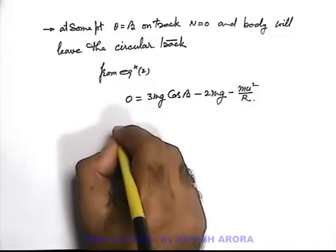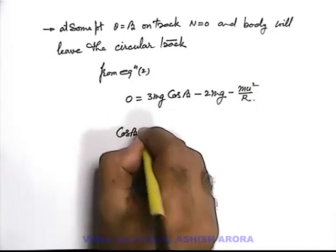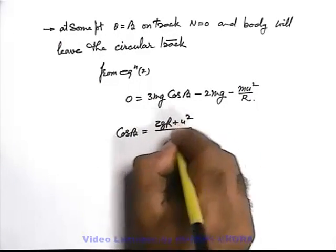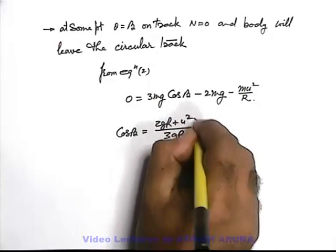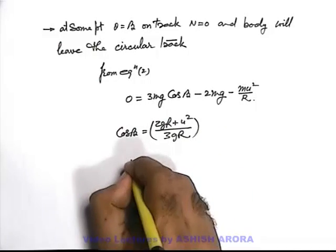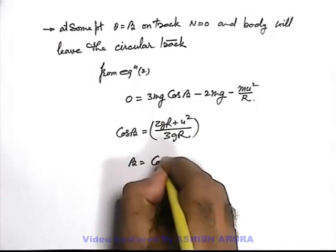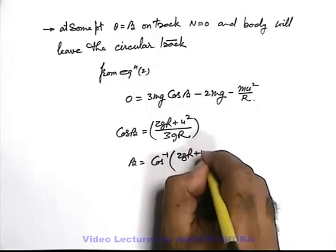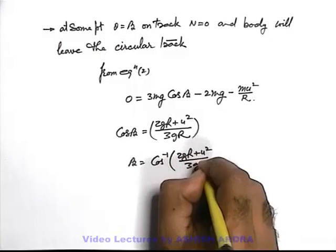So in this situation we'll get the value of cos beta as (2gR + u²)/(3gR), or beta we can write cos inverse of (2gR + u²)/(3gR).